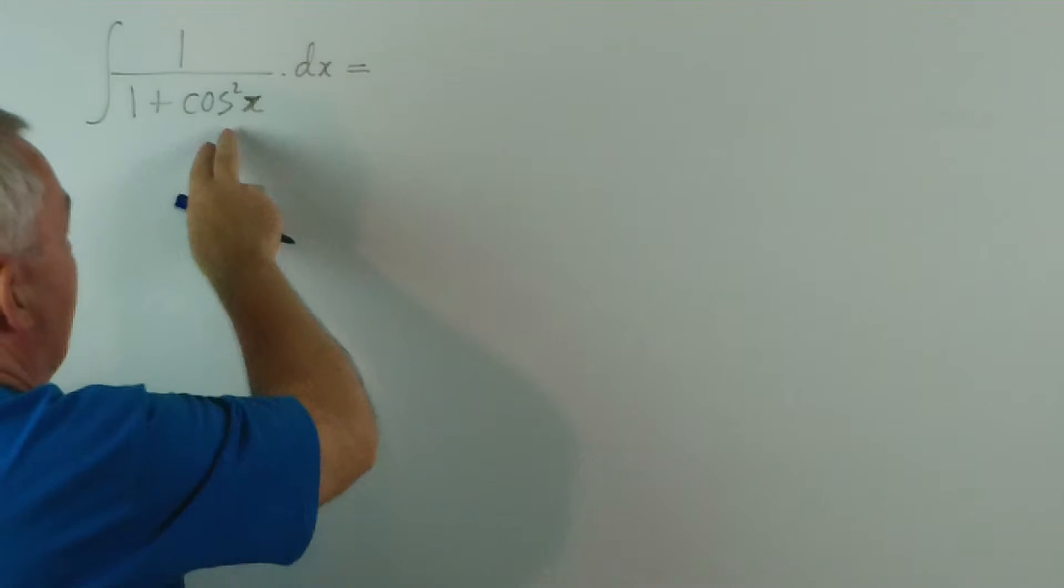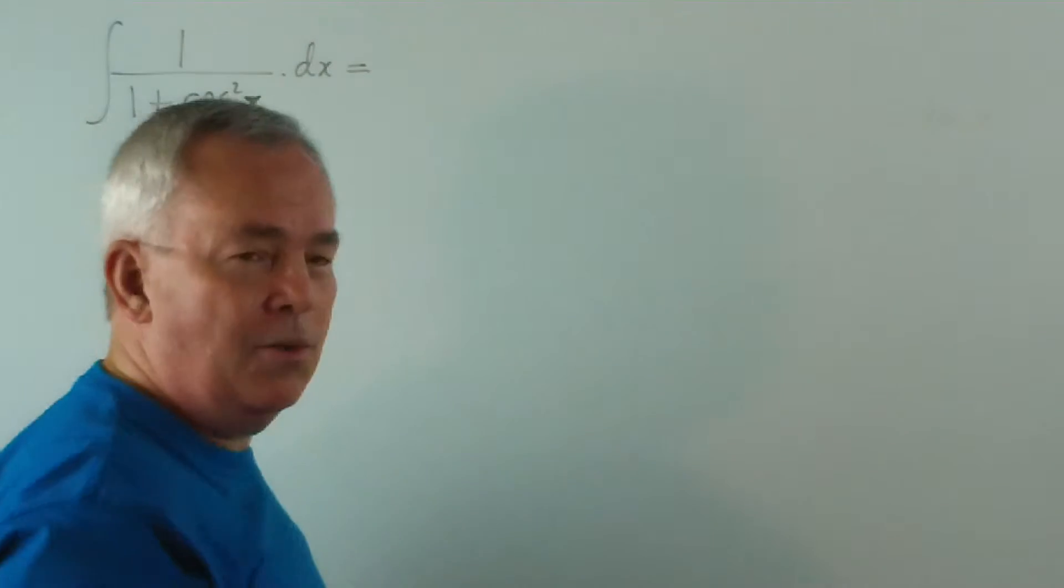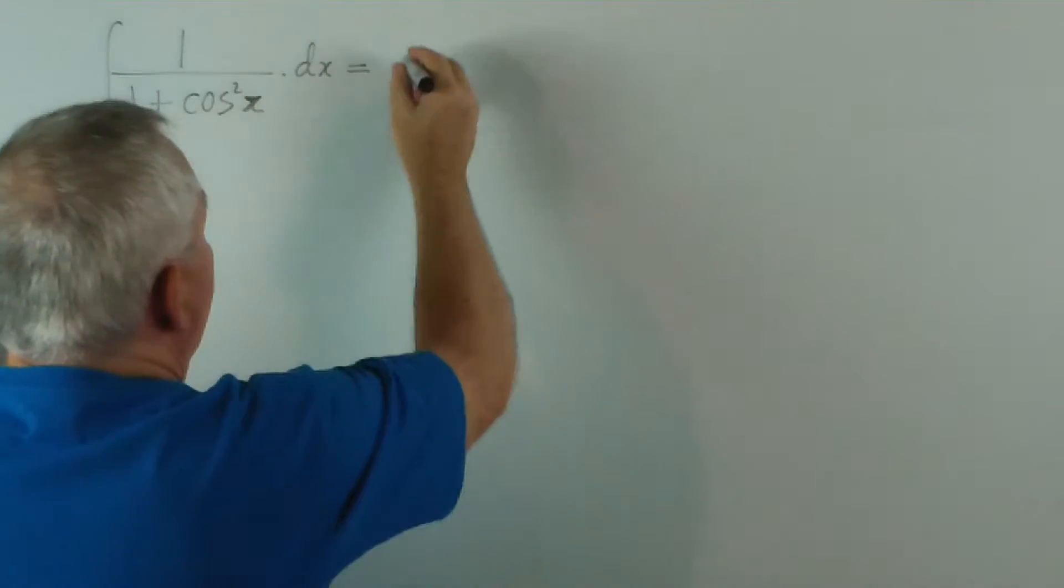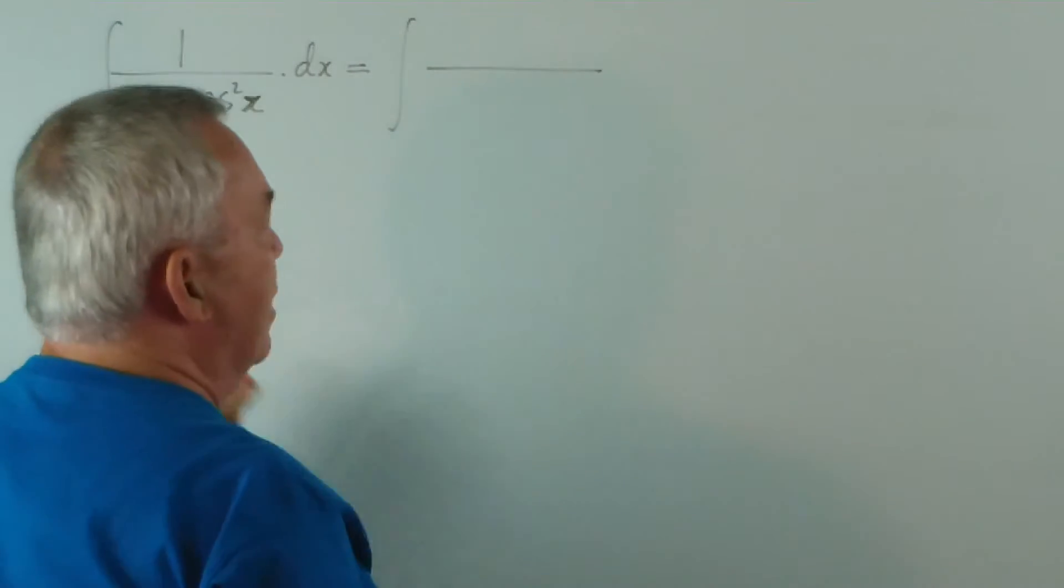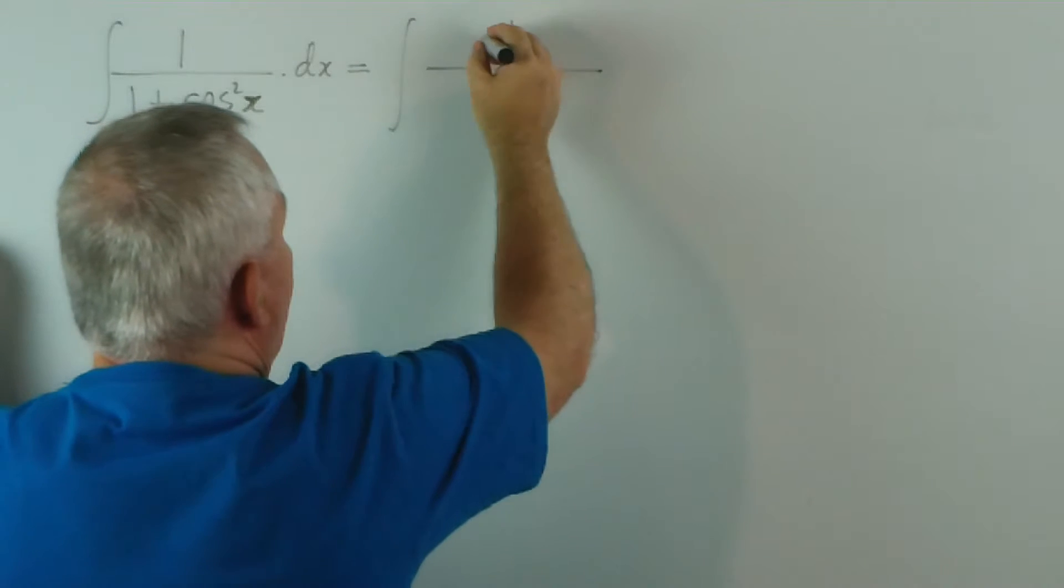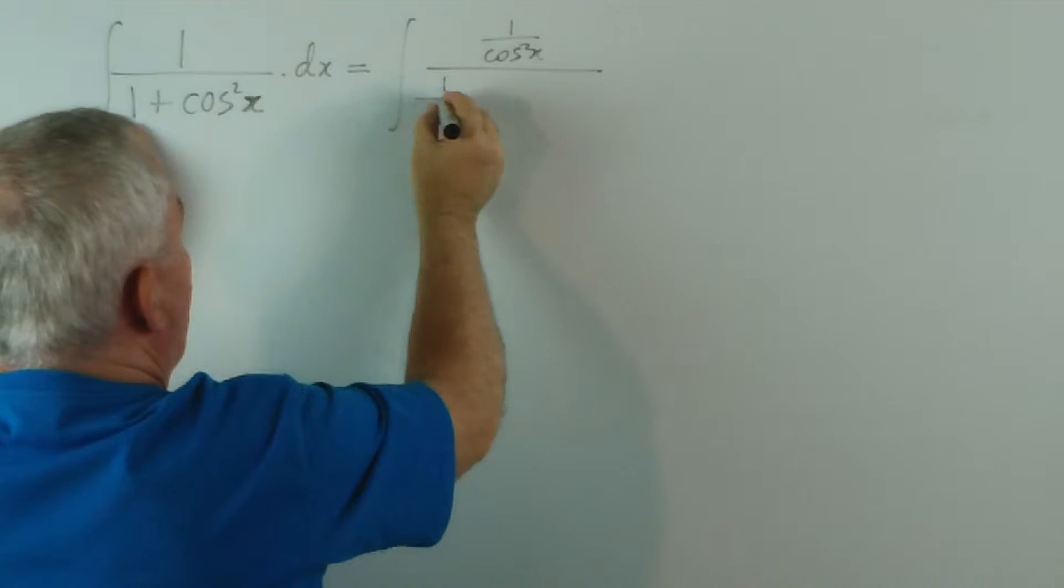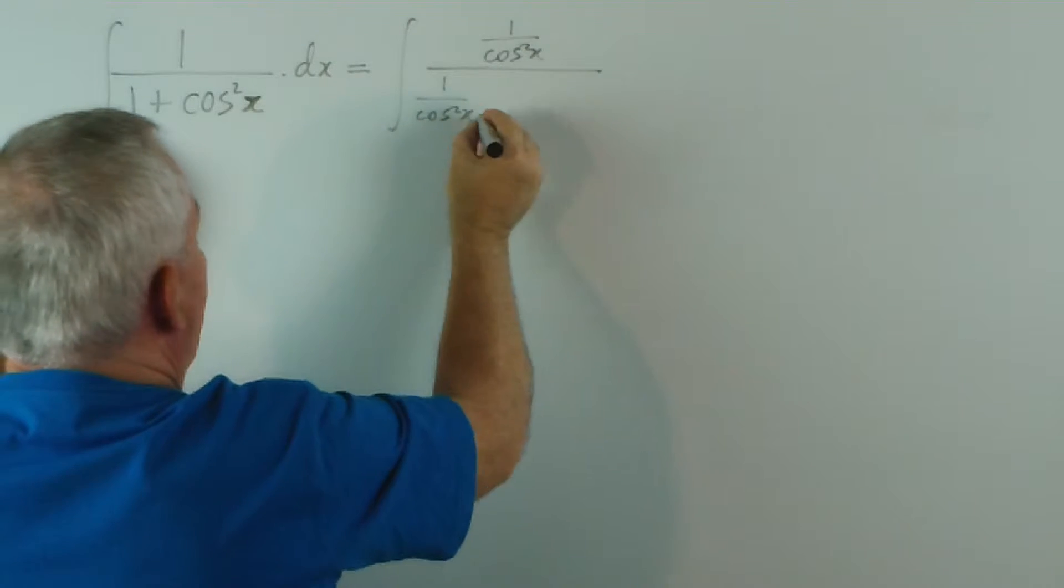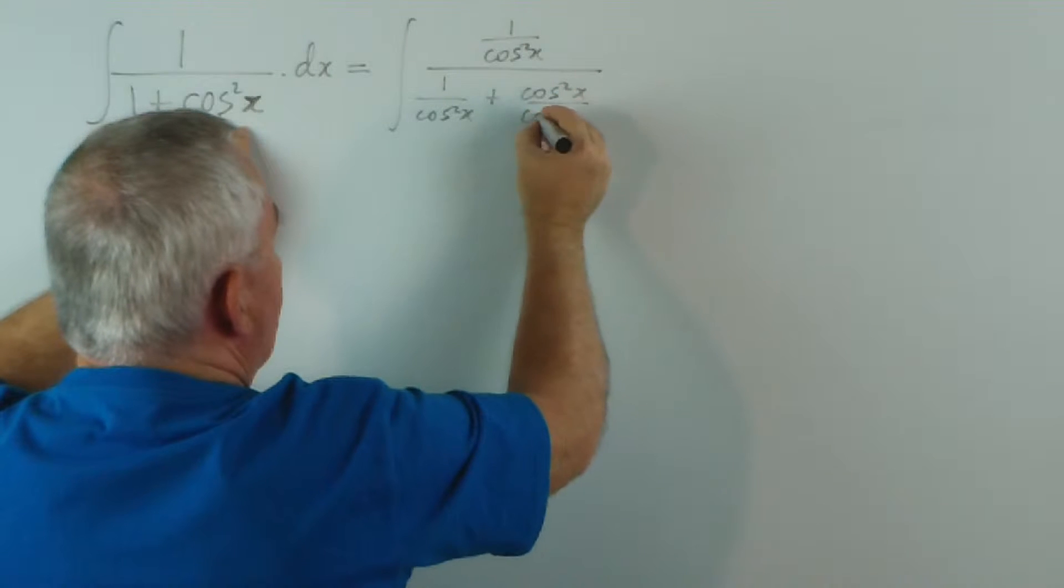How do we get sec squared x out of cosine squared? We divide numerator and denominator by cos squared x. I hope my explanation's made sense to you. I'm going to put in the step to make it clear. We divide the 1 by cos squared x, divide this by cos squared x, and divide the cos squared x by cos squared x.